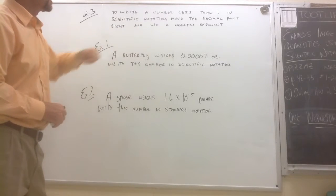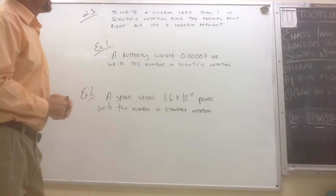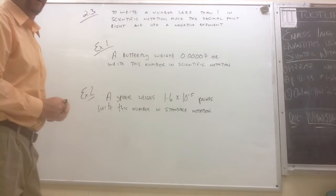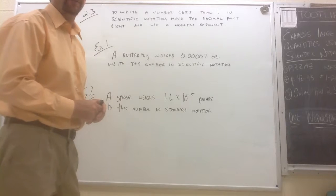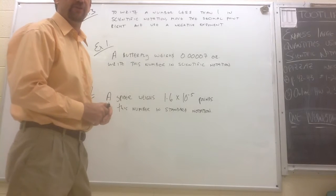Again, if you go up to your rule, it tells us to move the decimal point to the right. And if you remember from yesterday, scientific notation is always written as a product of two factors. The first factor has to be greater than or equal to one and less than ten.